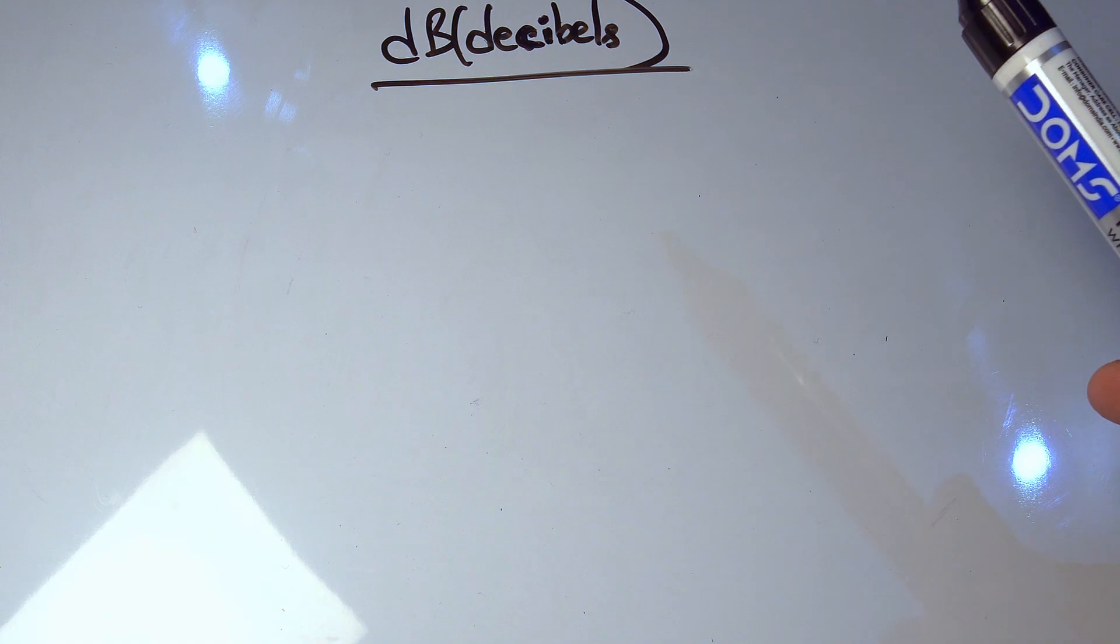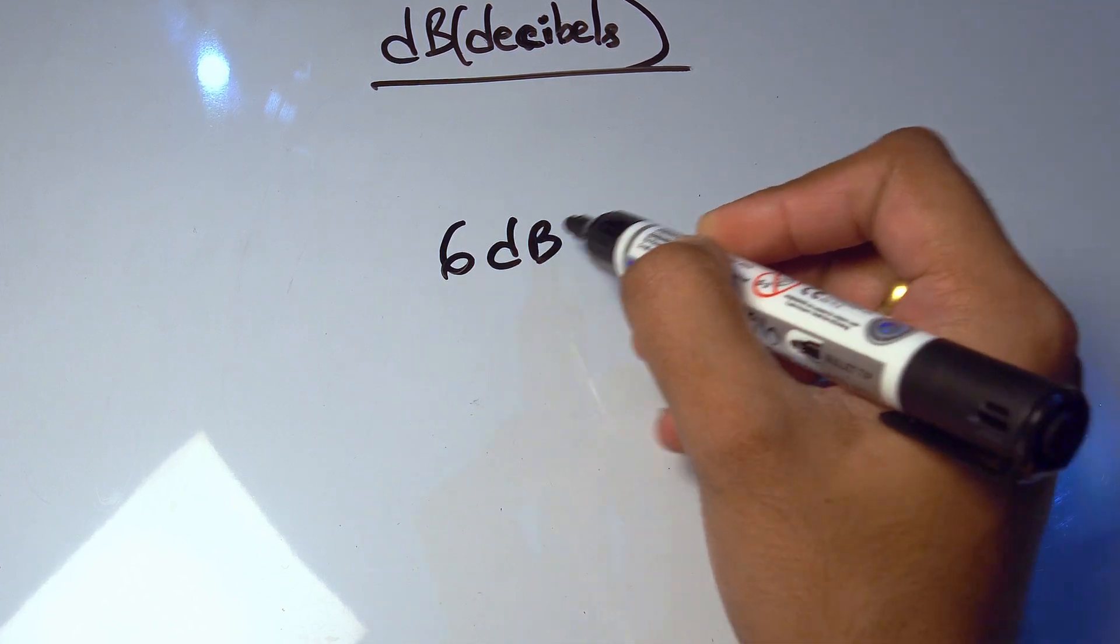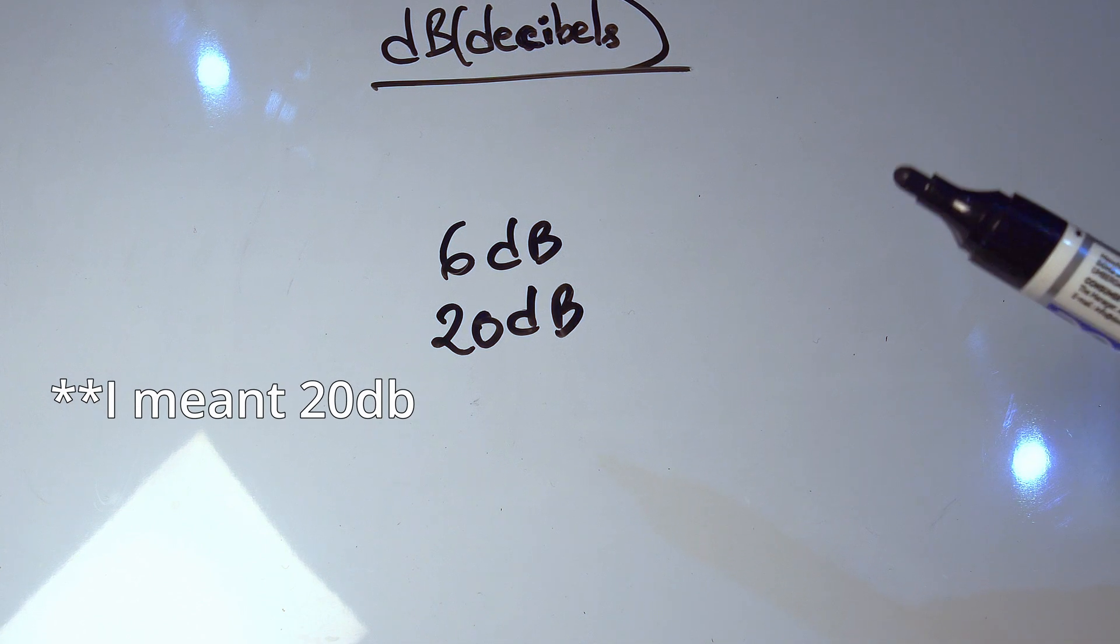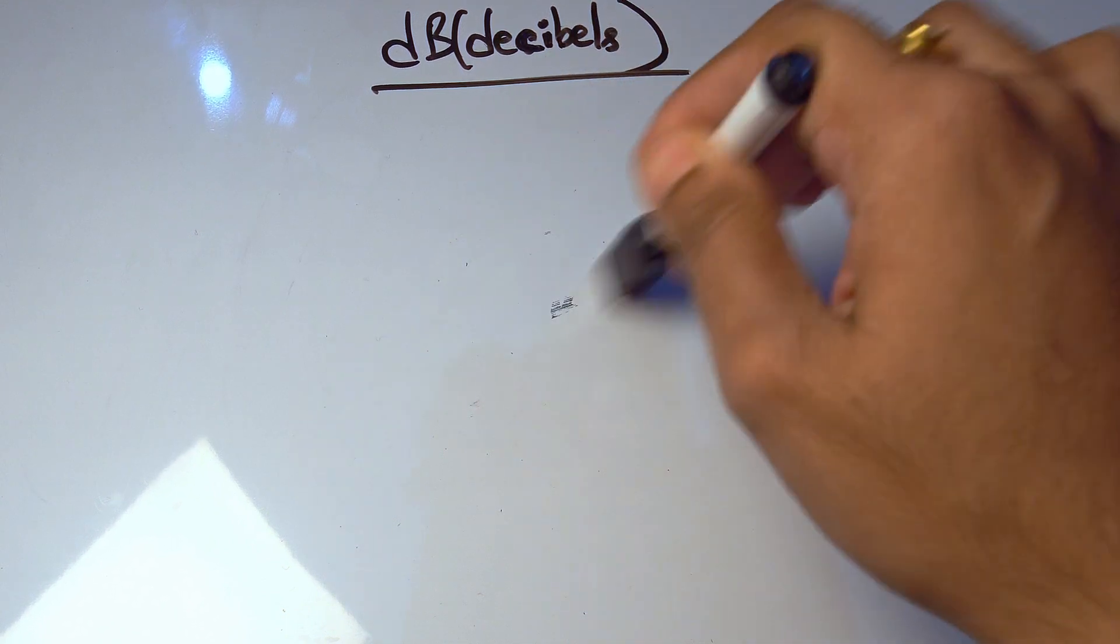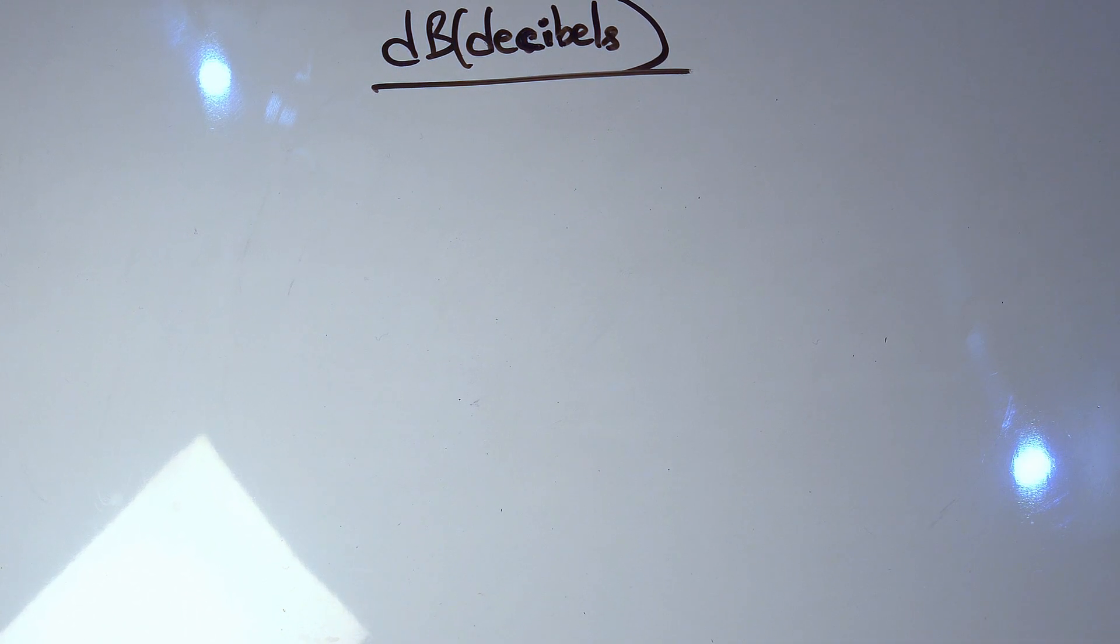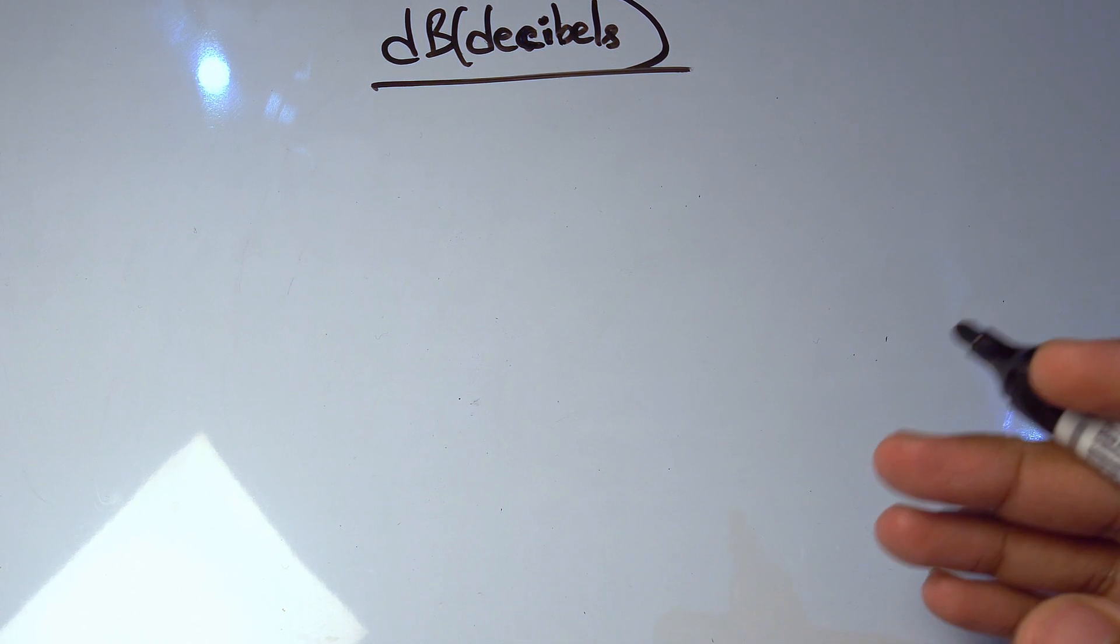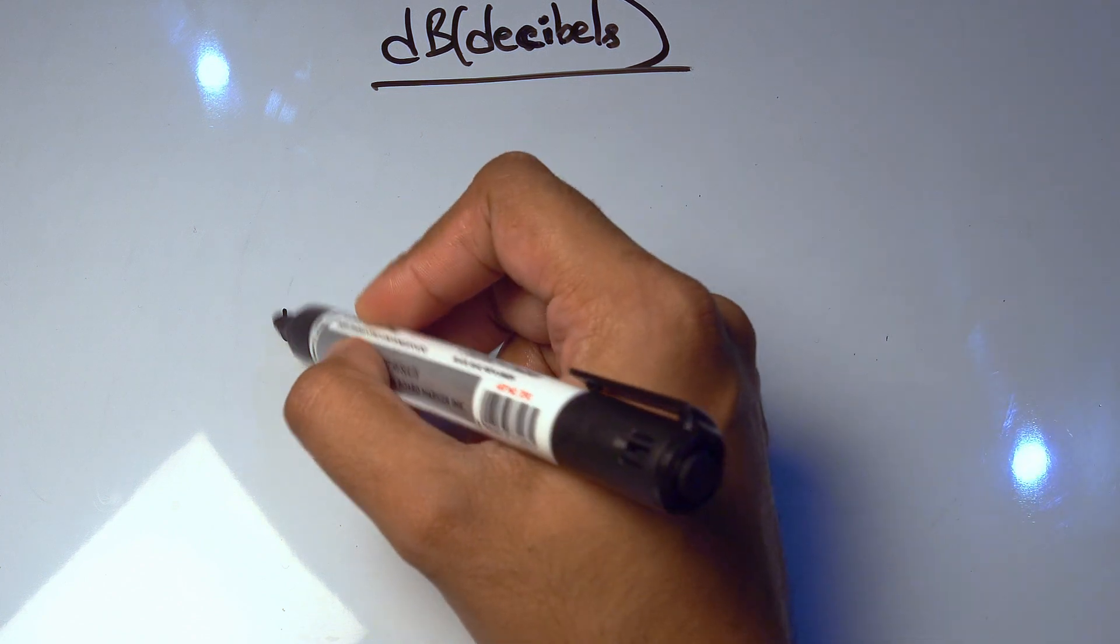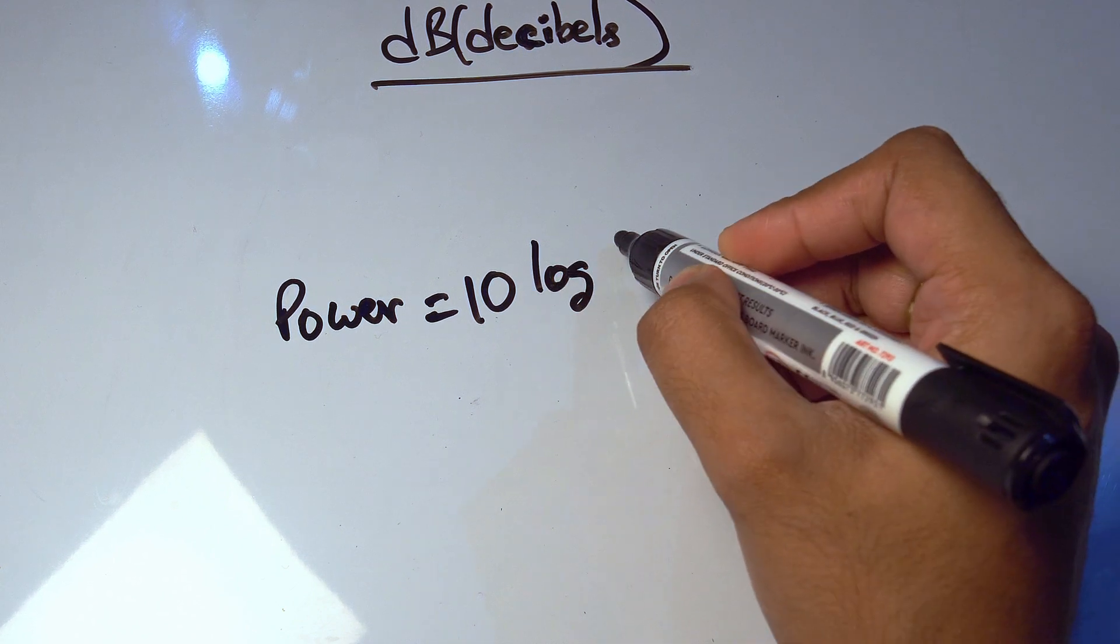dB or decibels itself doesn't have any meaning. What I mean is if you say 6dB or 12dB, it itself doesn't have any meaning. So dB is basically used for comparing values. It's a comparing unit, basically. So if I say your drum amplitude is 6dB down from the guitar amplitude, this simply means the guitar is 6dB louder. Just put a gain of 6dB in the drum sound and it will be equalized.